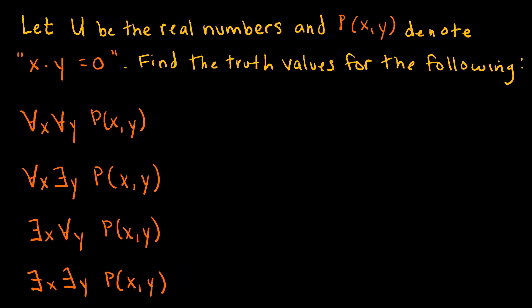Here is another practice. Let the domain be the real numbers and p(x,y) denote x times y equals 0. We want to find the truth values for each combination of quantifiers. The first statement: for all x and for all y, x times y equals 0. This is false, because it's saying I can choose any random x and any random y, multiply them, and get 0 — and that is not the case.